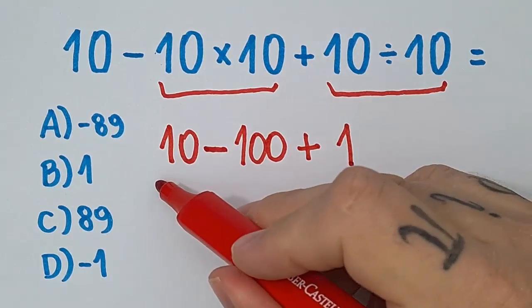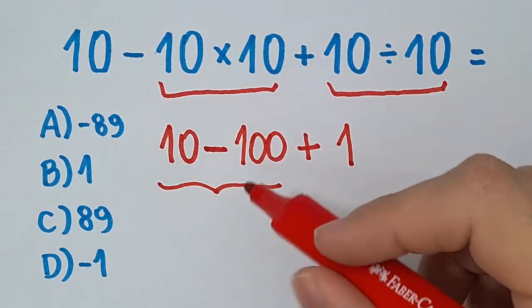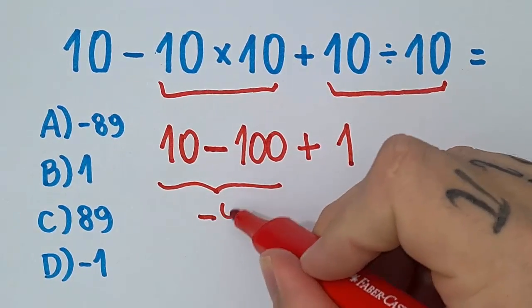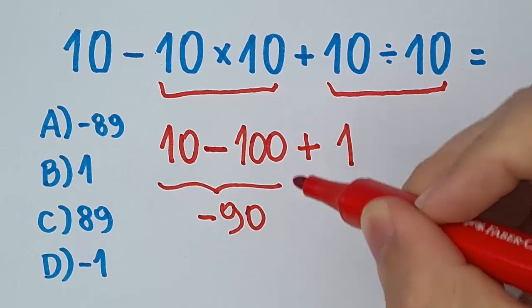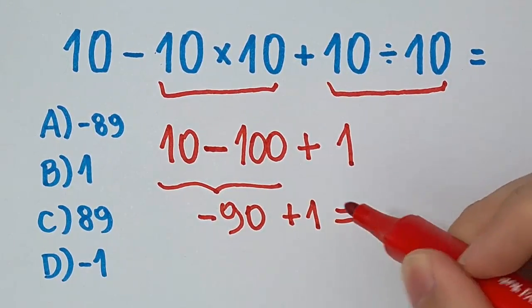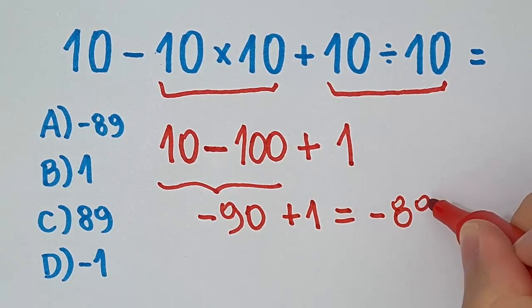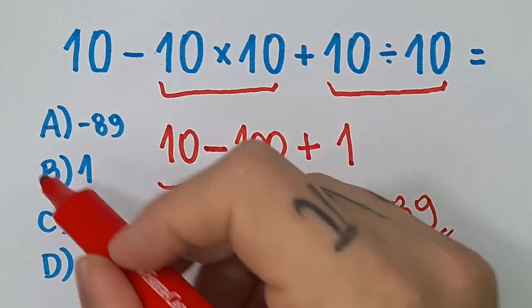Now, we can do it here and the result of this is negative 90 plus 1, that's equal to negative 89, letter A.